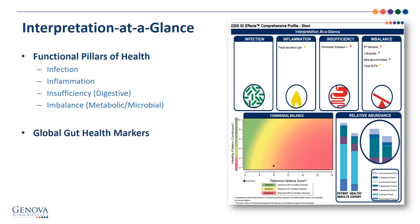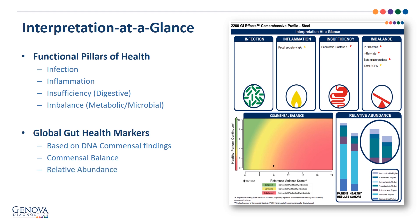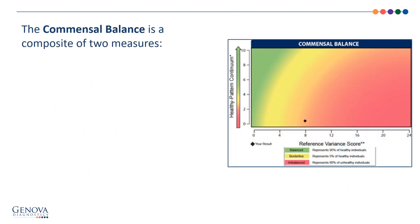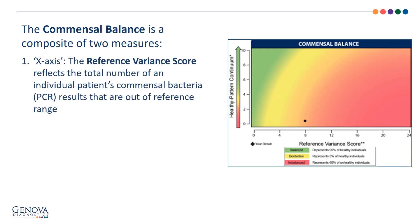At the bottom of the page there are global markers of gut health, specifically relating to the microbiome. The commensal balance and relative abundance graphics summarize the results of 24 commensal bacteria PCR targets that are found later on in the report. In the commensal balance graphic, the patient's result is plotted as a diamond against healthy and unhealthy commensal patterns. The x-axis is the reference variance score, and simply reflects the total number out of the 24 PCR results that were out of reference range.